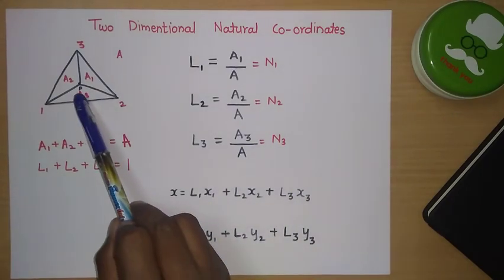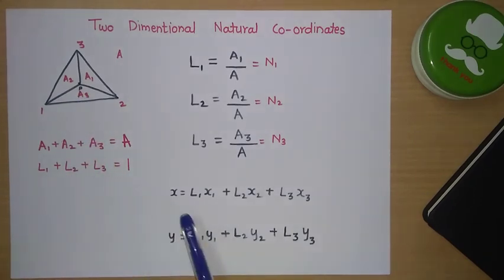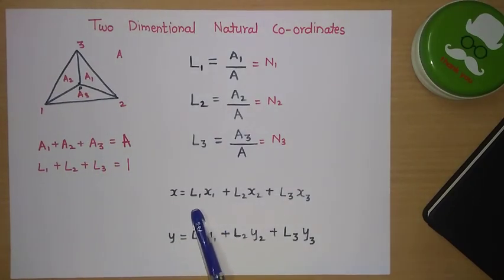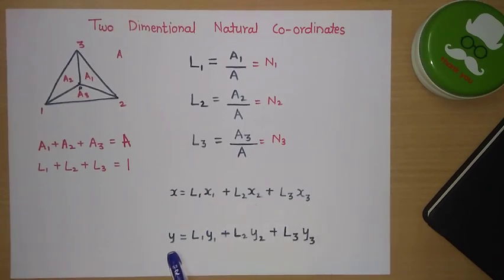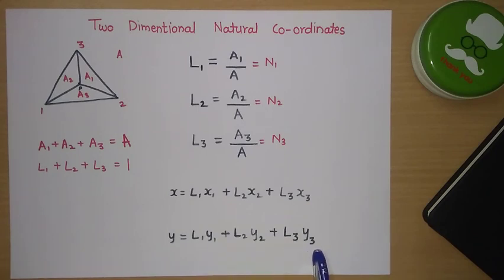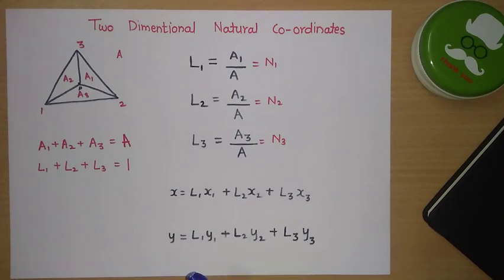For point P coordinates X and Y, these can be found using: X = L1·X1 + L2·X2 + L3·X3, and similarly Y = L1·Y1 + L2·Y2 + L3·Y3. These natural coordinates simplify terms involving shape functions, making calculations easier.